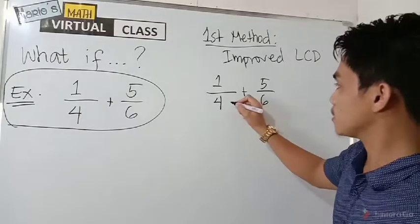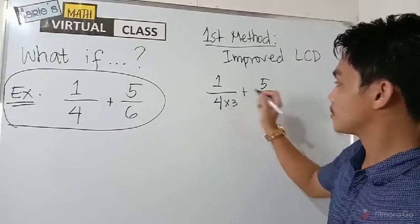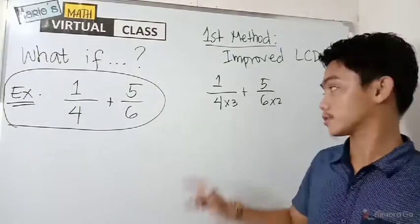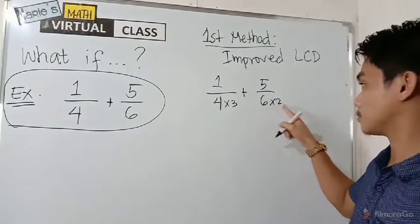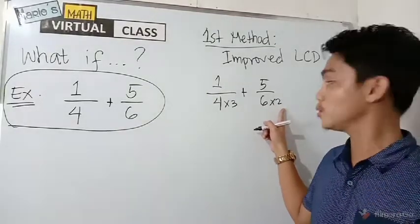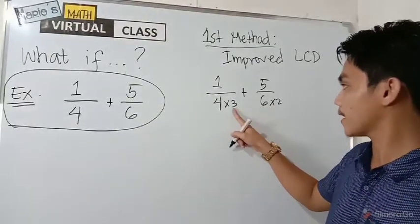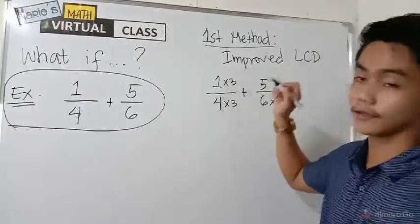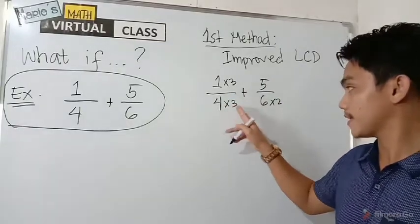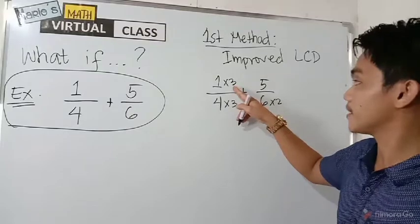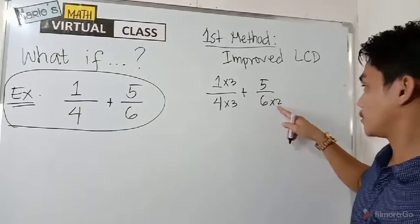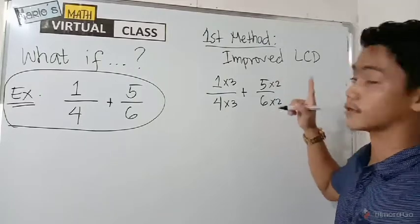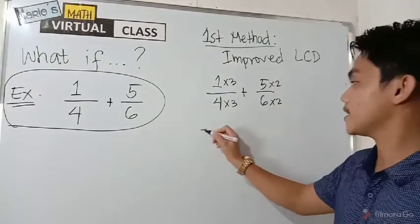So think of a number that you will multiply to four and a number that you will multiply to six that will make them the same. So probably you are thinking of, I will multiply three to four and I will multiply two to six for them to be the same because four times three is twelve and six times two equals twelve. But the rule is if you are going to multiply three to the denominator, you are going to multiply three to the numerator. If you are going to multiply two in the denominator here, you are going to multiply two in the numerator here.